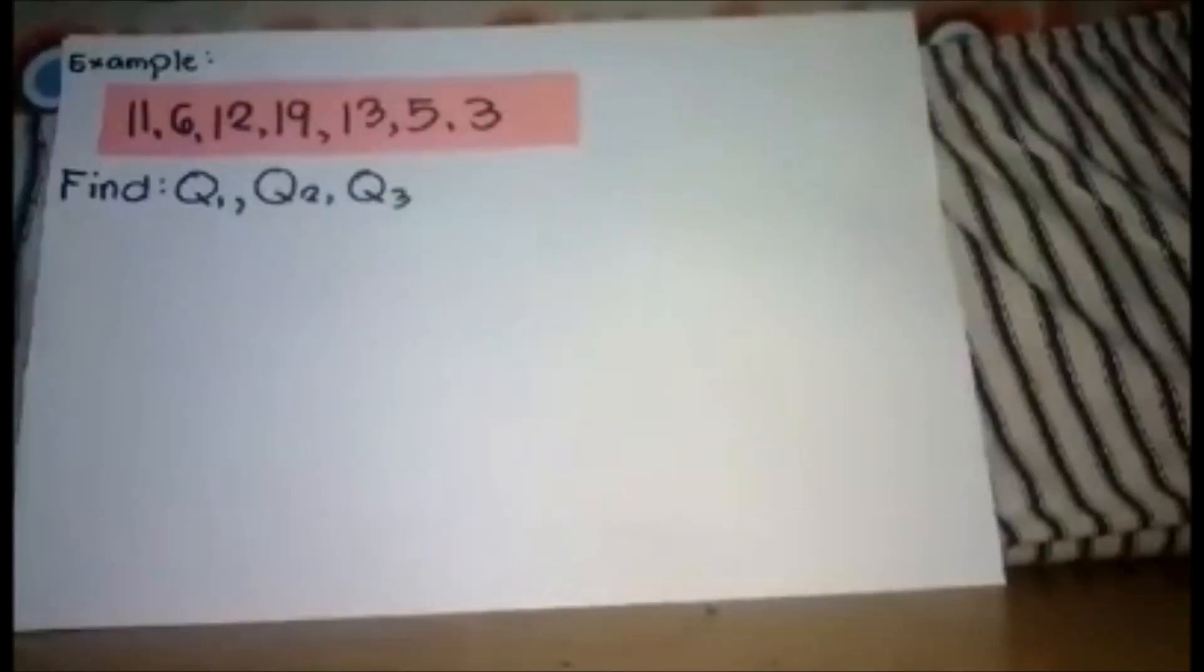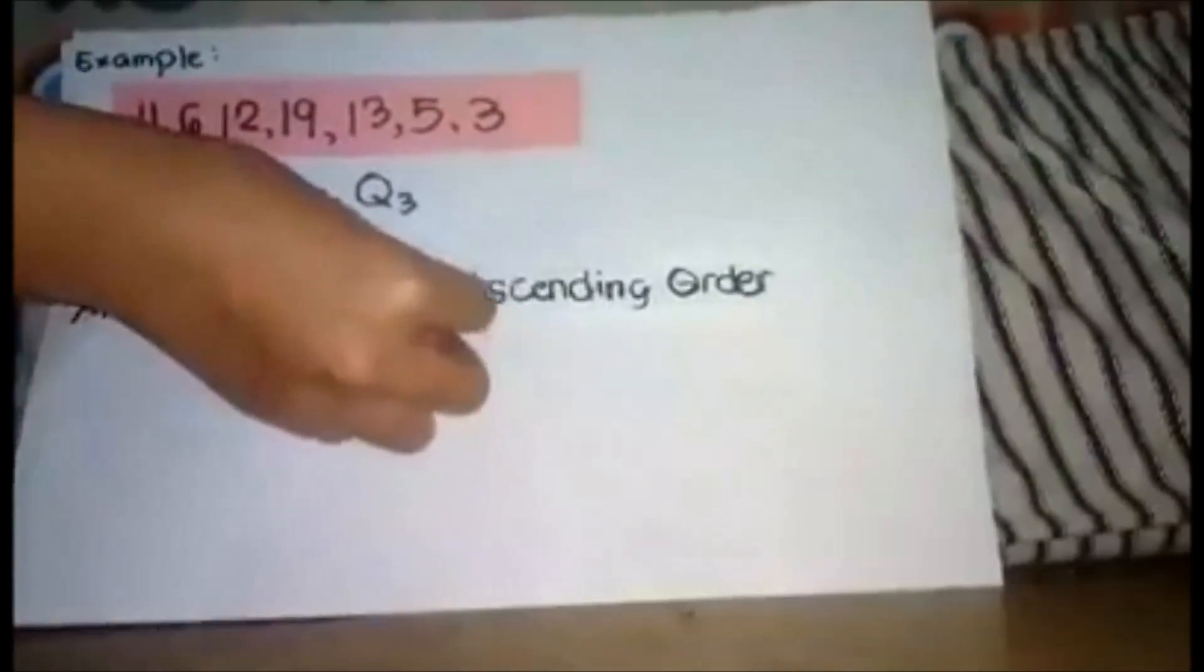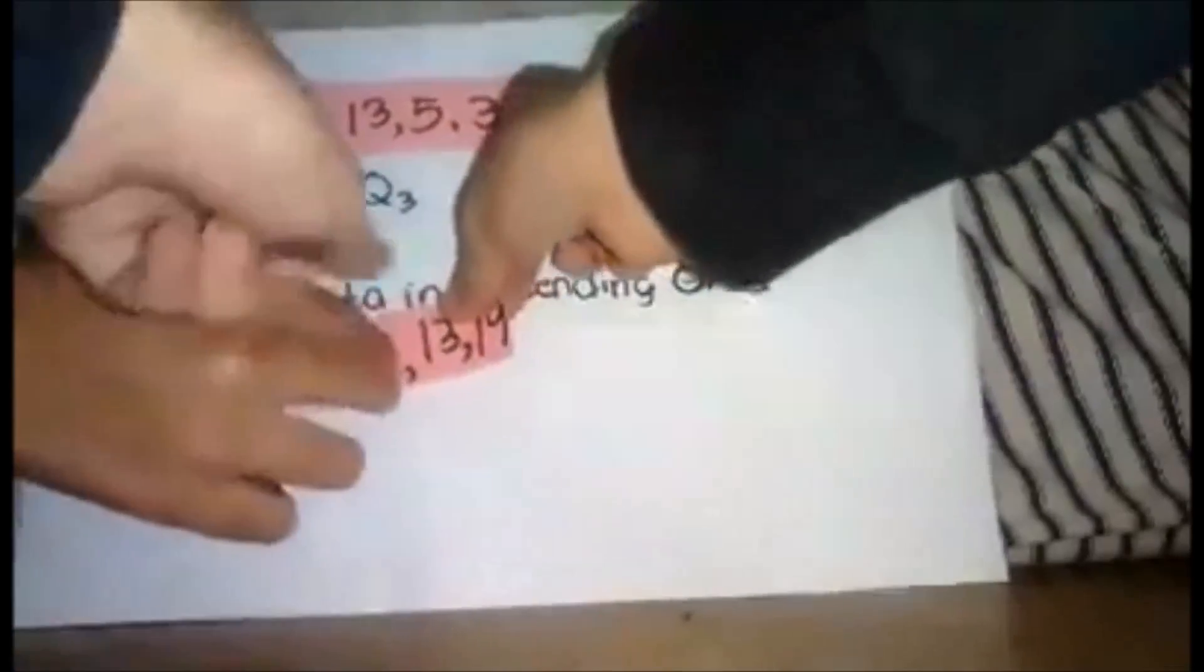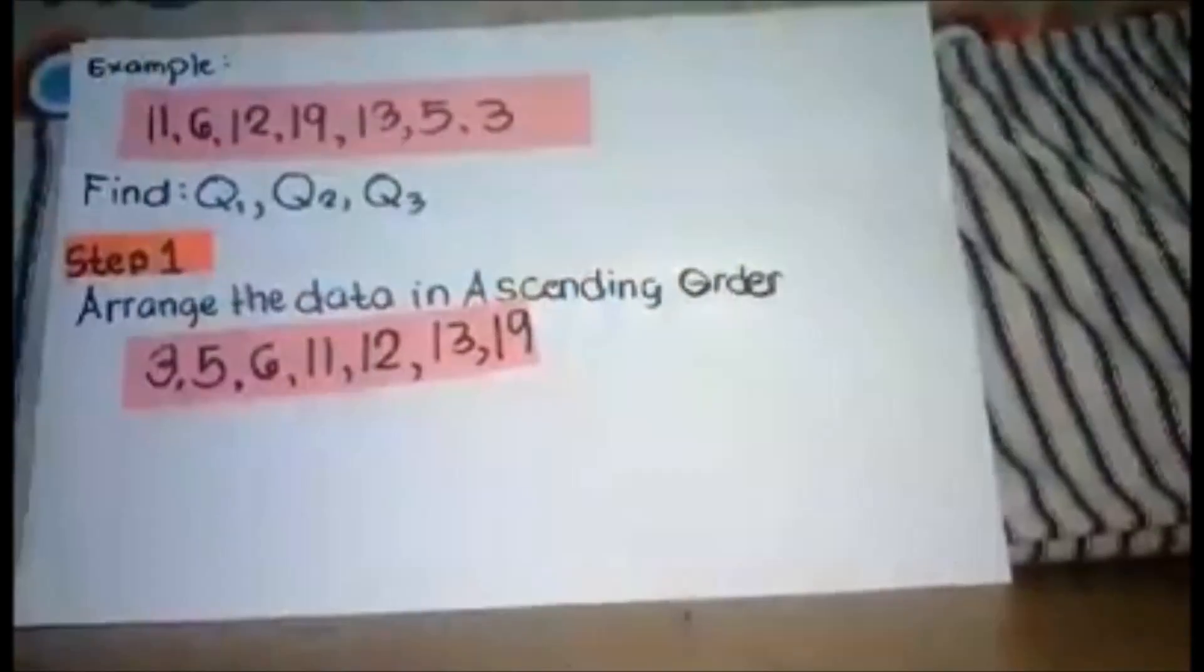In this data, we have seven numbers. In order to answer the question, the first thing we should do is arrange the data in ascending order. When you say ascending order, from smallest to biggest number. So in this data, from 3 to 19, from smallest to biggest number.